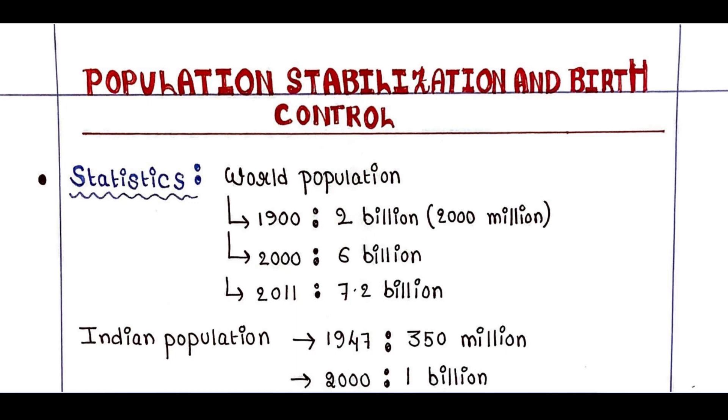So first, let's check those statistics. The world population was only 2 billion, or 2,000 million, in 1900. It was 6 billion in 2000 and 7.2 billion in 2011. So 1 million is equal to 10 lakhs, right.